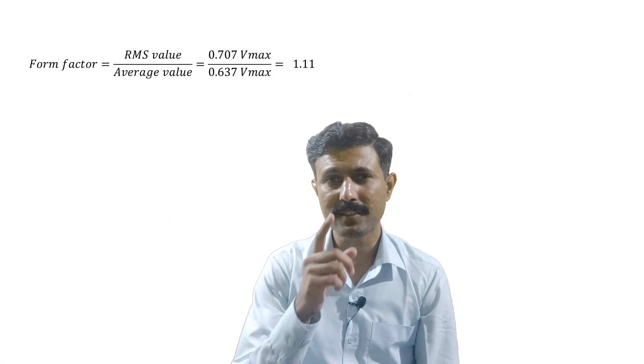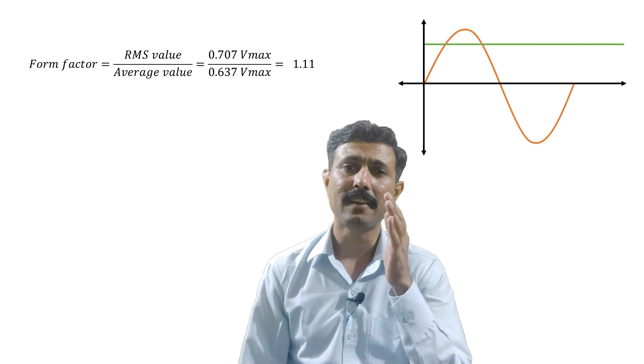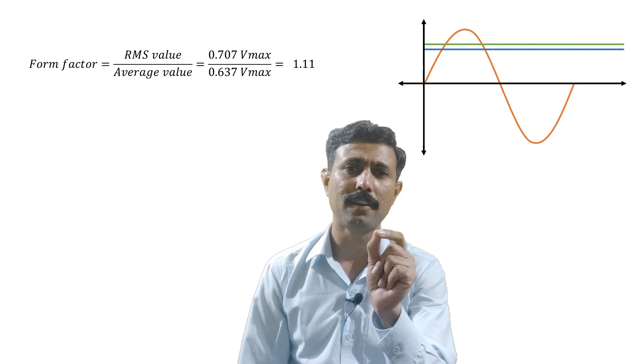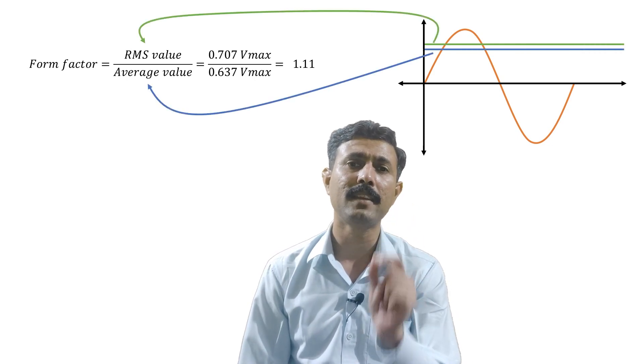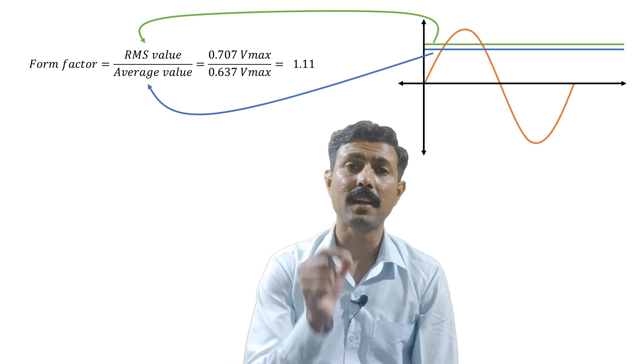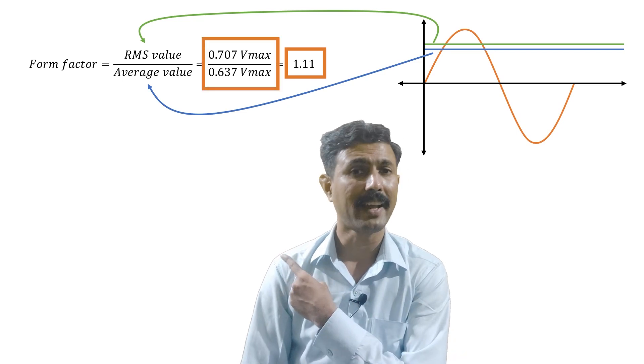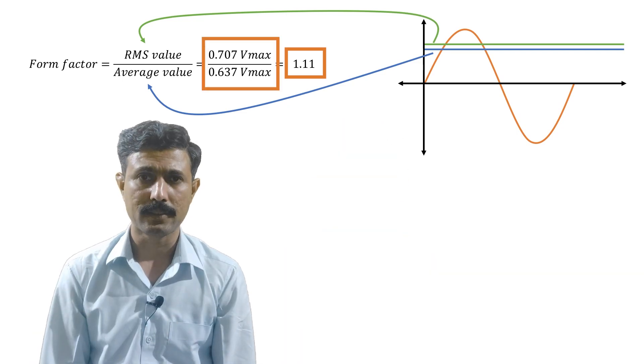I'll tell you the real logic and real reason behind this. So let's get started. The definition of form factor is: it is the ratio of the RMS value of a sine wave divided by the average value of a sine wave, and that ratio gives us the number 1.11. So this is what the form factor is.